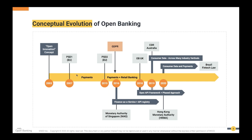Open banking started from the need for payments and collaboration between payment providers, then evolved to PSD2, the second version in the European Union, which came in 2015 and included both payments and retail banking. In 2016, Singapore under the Monetary Authority of Singapore and the Association of Banks introduced Finance as a Service, along with the concept of an API registry where a central registry would register open banking APIs of banks. Open Banking UK then went live in 2018.